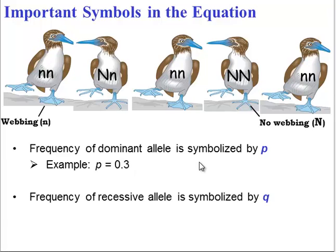The frequency of the recessive allele is symbolized by q. In this case, it's 0.7. And as we've seen in class, p and q add up to 1, because there's only a dominant and a recessive allele for this trait.